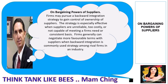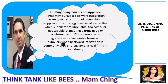According to Fred R. David, on bargaining power of suppliers, firms may pursue a backward integration strategy to gain control or ownership of suppliers. This strategy is especially effective when suppliers are unreliable, too costly, or not capable of meeting a firm's needs on a consistent basis. Firms can generally negotiate more favorable terms with suppliers when backward integration is commonly used among rival firms in an industry.